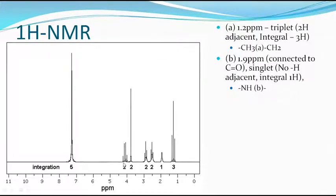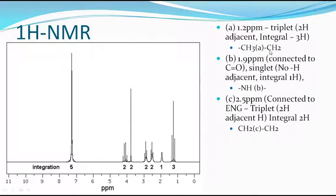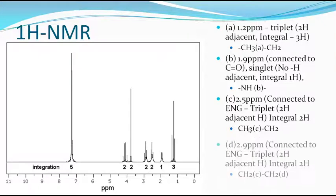NH is the signal at B. The peak at 2.5 PPM is connected to an electronegative group — it may be nitrogen or oxygen. It is a triplet, so there must be two adjacent hydrogens, and the integral says two hydrogens. Therefore, there must be a CH2 CH2 fragment. These two CH2 fragments are not the same, because if C were connected to this CH2, it should be a quartet. Since it is a triplet, these two fragments are different.